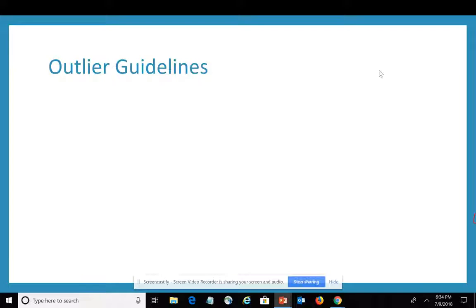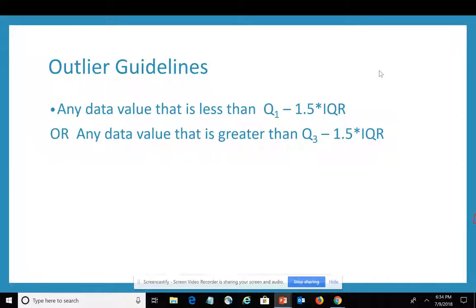Here's the rule or guideline for determining whether or not you have an outlier. Any data value that is less than Q1 minus 1.5 IQR or any data value that is greater than Q3 minus 1.5 IQR is considered an outlier for the data set.